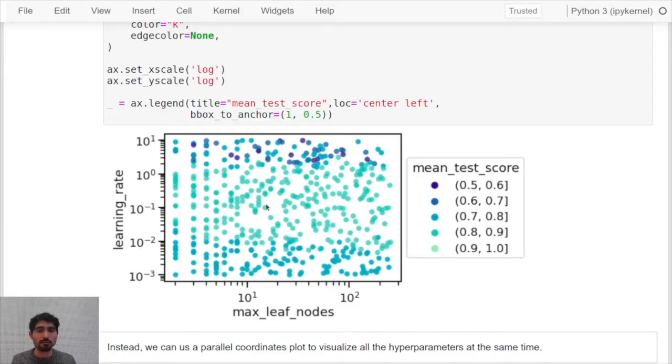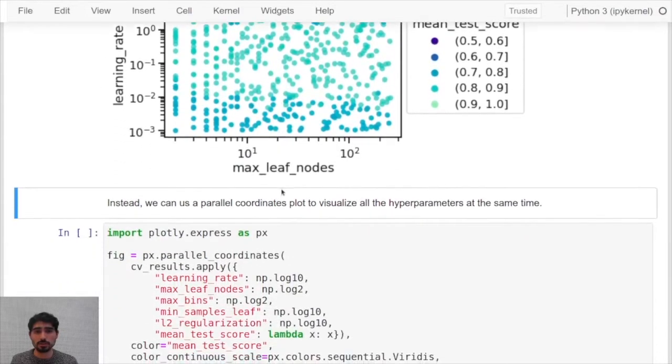But the problem with this visualization is that it's a two-dimensional projection of a multi-dimensional hyperparameter space. So we don't really have control on how the other parameters influence or not these different points. Maybe we can think of a more clever way to visualize the results.